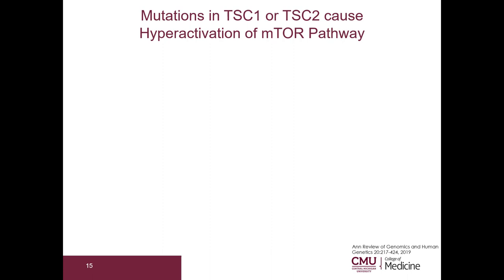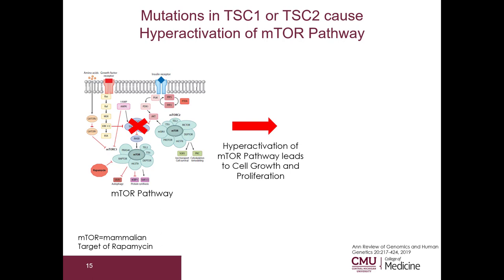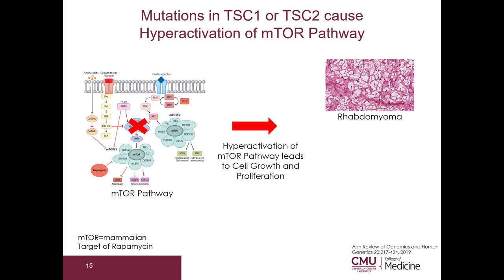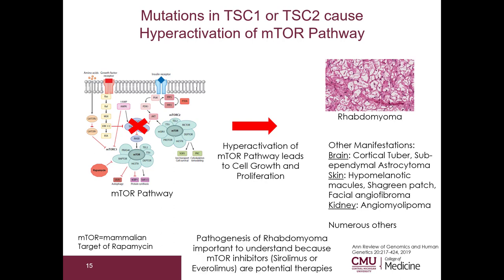Let's spend a little more time on the pathogenesis. This is a drawing of the mTOR pathway. I've put an X here to show that TSC1 or TSC2 has been inactivated. This will result in hyperactivation of the mTOR pathway and lead to cell growth and proliferation. Manifestations include rhabdomyoma, cortical tubers and subependymal astrocytoma in the brain, hypomelanotic macules, shagreen patch, and facial angiofibroma in the skin, and angiomyolipoma in the kidney. This is important because mTOR inhibitors are potential therapies for some tuberous sclerosis patients.